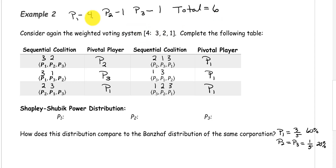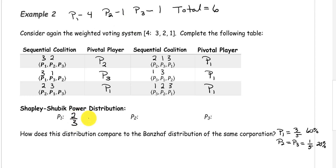And then we make up our fractions. So for player 1, it's 4 divided by 6, and we need to express that fraction in reduced form. Both 4 and 6 are divisible by 2, so that reduces down to 2 thirds. Player 2 was pivotal one time, so that's 1 sixth. And player 3 was also only pivotal once, so they are also 1 sixth.